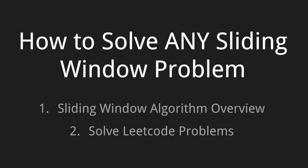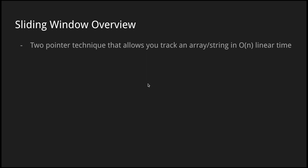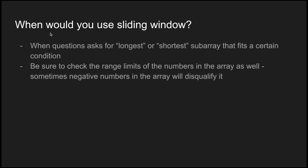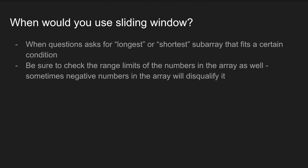The pattern I'll go over today is the sliding window. I'll cover the fundamentals and show how to apply it to LeetCode problems. Briefly, sliding window is a clever two-pointer technique that allows you to track an array or stream in linear time. You initialize a left and right pointer, and there are only two options: expand the window or shrink the window depending on the condition. You'd use this pattern when a problem asks for the longest or shortest subarray fitting a certain condition. The one check is that all numbers must be positive, because the window value may not increase as the window expands if there are negative numbers.